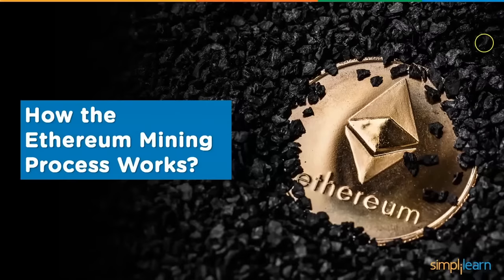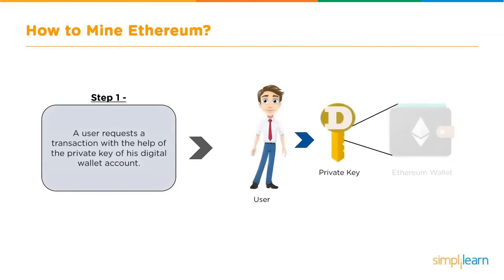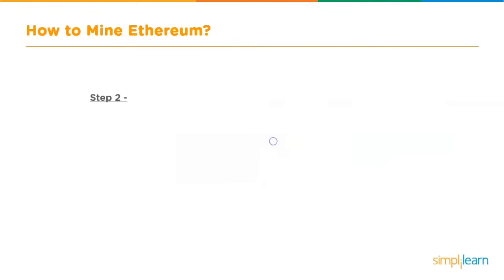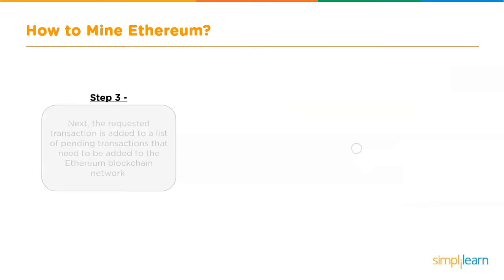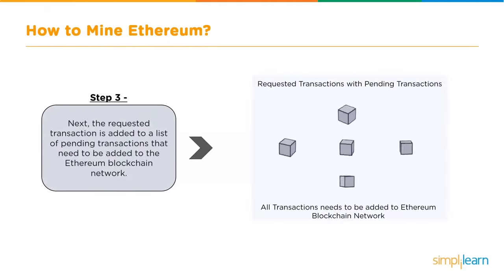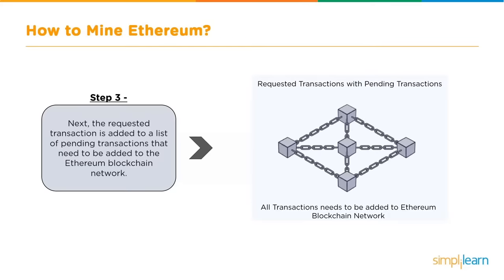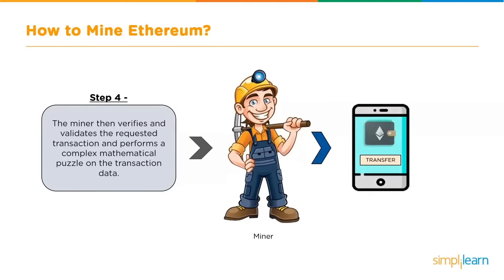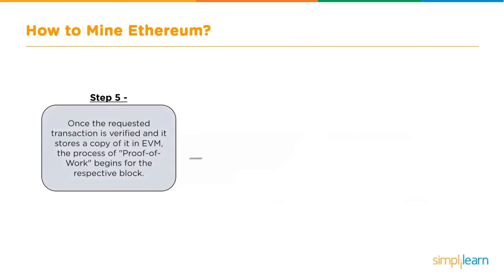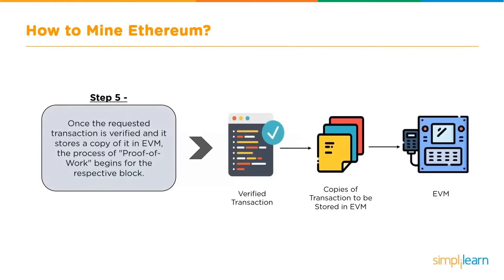Now let's understand how the Ethereum mining process works. Step one: a user requests a transaction with the help of the private key of a digital wallet account, then the request is shared worldwide with the Ethereum network. Next, the requested transaction is added to a list of pending transactions that need to be added to the Ethereum blockchain network. Step four: the miner then verifies and validates the requested transaction and performs a complex mathematical puzzle on the transaction data. Step five: once the transaction is verified and a copy stored, the process of proof of work begins for the respective blocks.